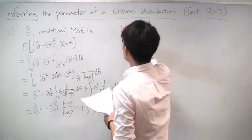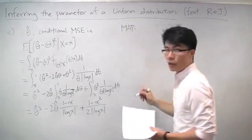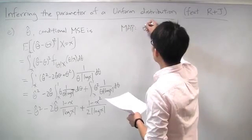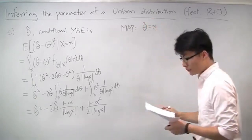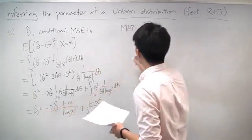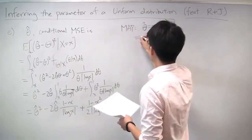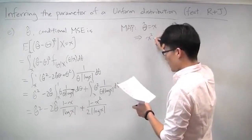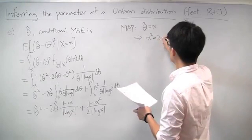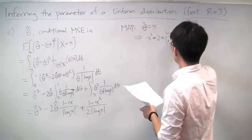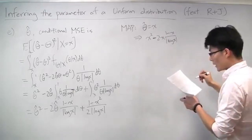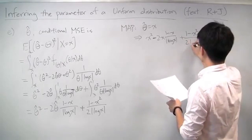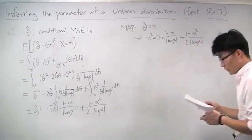Now let's calculate what it actually is for the specific estimators we came up with. For the MAP rule, the estimate theta-hat is just equal to x. When we plug that in, we get that the conditional MSE is equal to x squared minus 2x times (1 minus x) over absolute value of log x, plus (1 minus x squared) over 2 times absolute value of log x.